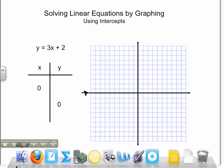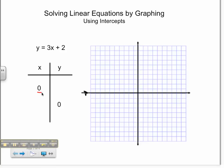I will start off by finding out what the value of y is when x equals 0. 3 times 0 is 0, plus 2 equals 2, therefore y is 2.